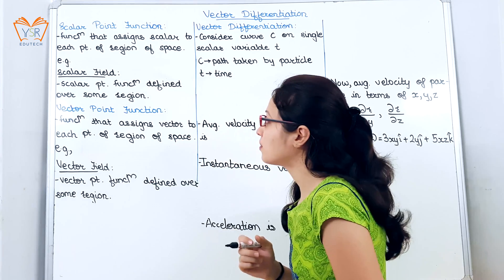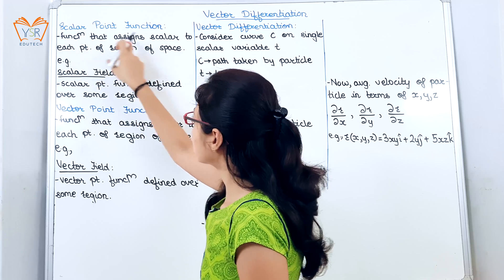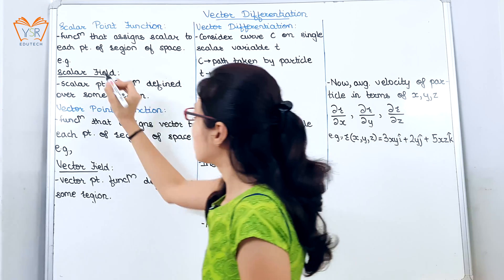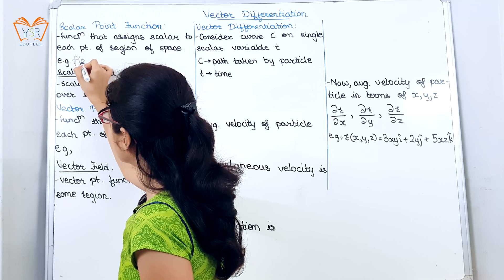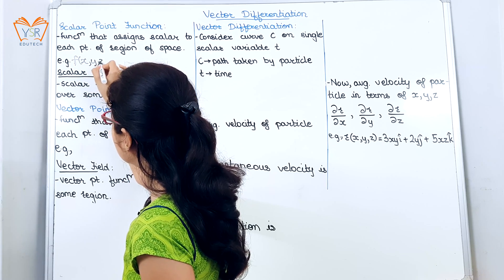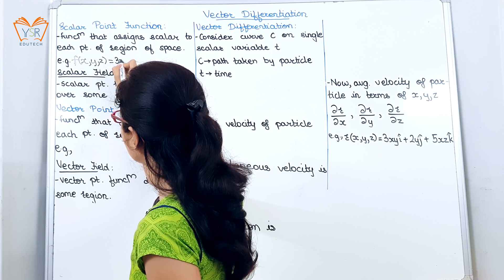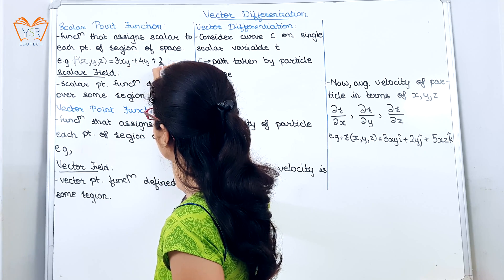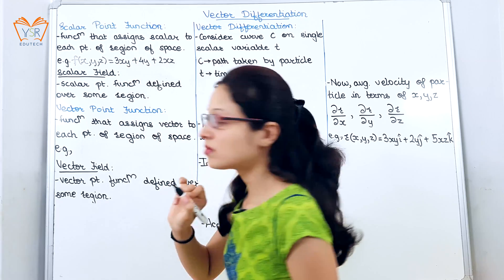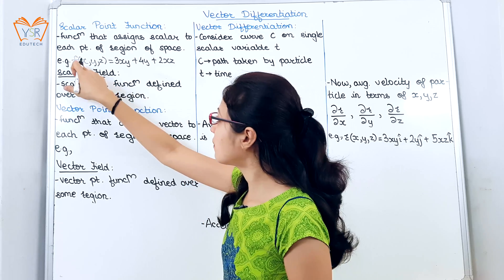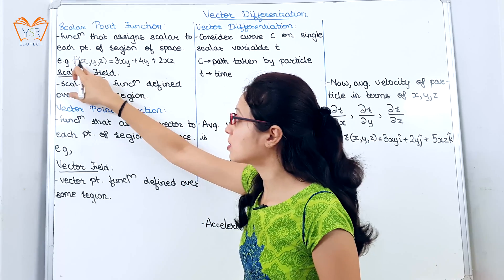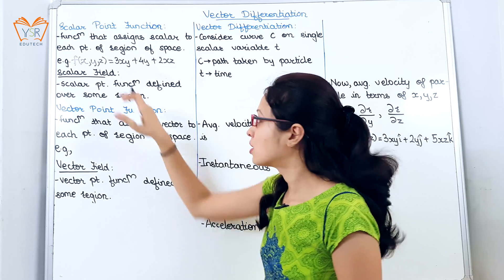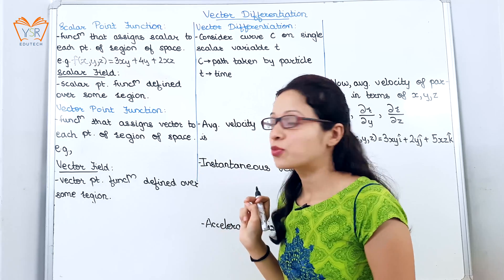Starting with scalar point function, it is a function that assigns a scalar to each point of a region of space. We will consider one example and then understand the definition: f(x, y, z) = 3xy + 4y + 2xz. Now if you substitute the values of x, y, z in this function, the output will always be a scalar quantity. So this is nothing but a scalar point function.